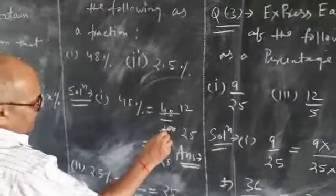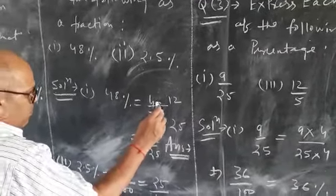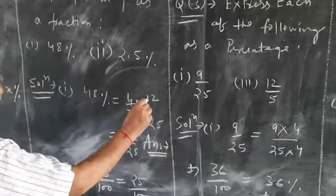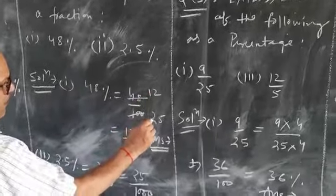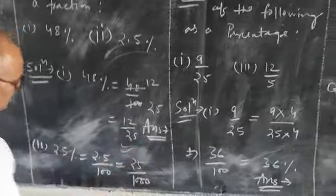First question: 48 percent. It can be written as 48 upon hundred. By cancellation, after dividing both by 4, we get 12 upon 25. Therefore, 12 upon 25 is the correct answer.